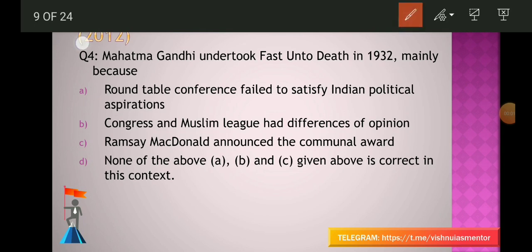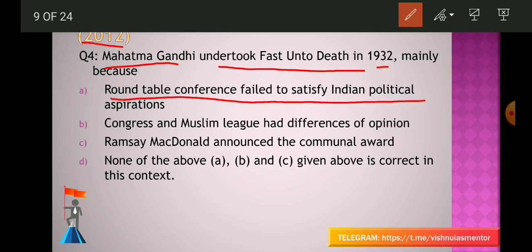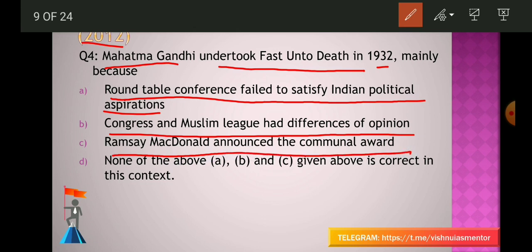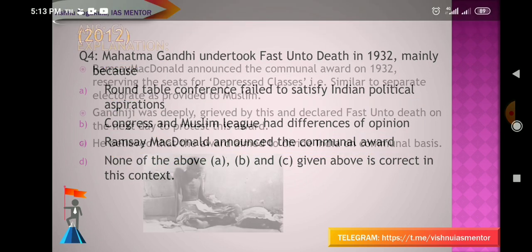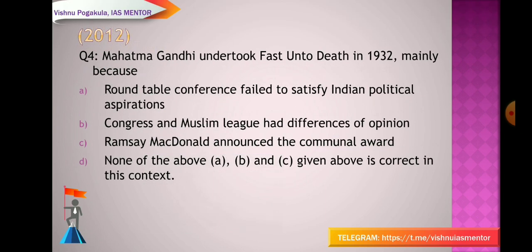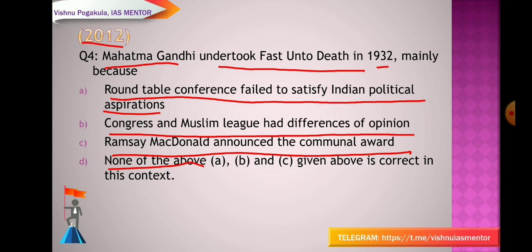From the 2012 question paper: Mahatma Gandhi undertook fast unto death in 1932 mainly because — (A) Round Table Conference failed to satisfy Indian political aspirations, (B) Congress and Muslim League had differences of opinion, (C) Ramsay MacDonald announced the Communal Award, (D) none of the above. The answer is C — Ramsay MacDonald announced the Communal Award.